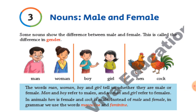Now, there are some nouns that tell us the difference — like, this is male or female. Male means purush and female means lady, girl, boy. So, what do we call this difference? Gender.